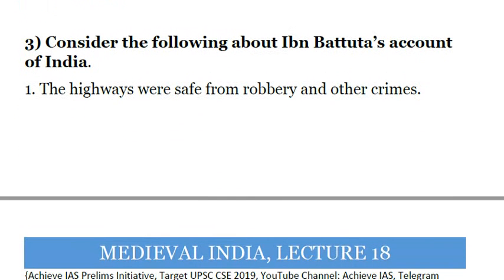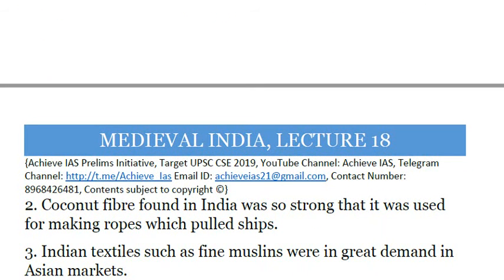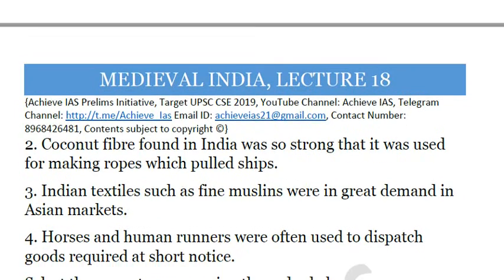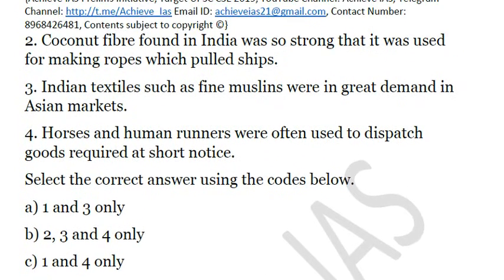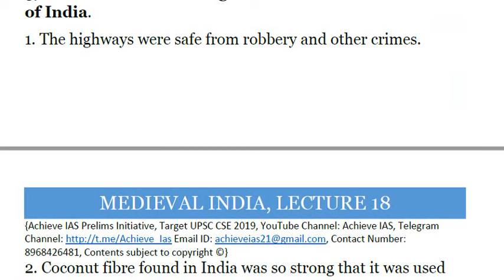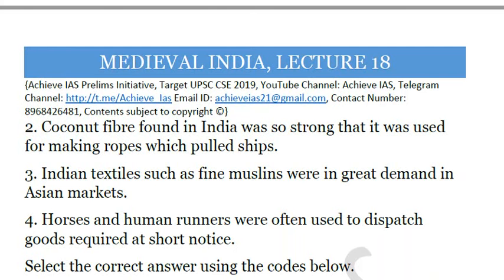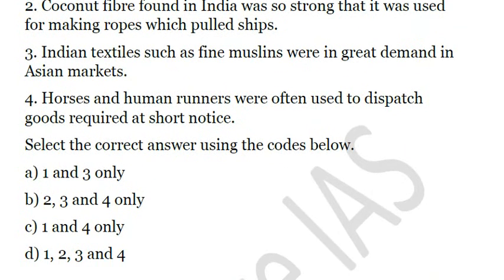The next question: consider the following about Ibn Battuta's account of India. First, the highways were safe from robbery and other crimes. Second, coconut fiber found in India was so strong that it was used for making ropes which pulled ships. Third, Indian textiles such as fine muslins were in great demand in Asian markets. Fourth, horses and human runners were often used to dispatch goods required at short notice. Ibn Battuta did not find the highways safe from robbery — he said highways were not safe. So the first is incorrect. The second, third, and fourth are correct. The answer is B: second, third, and fourth only.